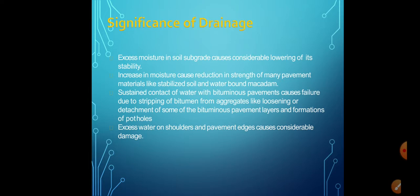Excess water on the shoulder and pavement edges causes considerable damage to pavement structures. Stagnation of water on the pavement surface or edge, and increase in moisture content in the pavement layers, can cause reduction in the strength characteristics of most flexible pavement components. Sustained contact of water with bitumen pavement causes failure due to stripping of bitumen from aggregate, or detachment of bituminous pavement layers and formation of potholes.